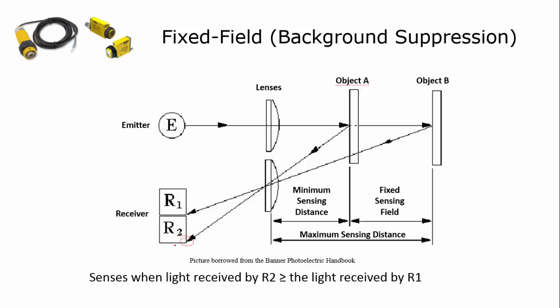Remember, the sensor senses as long as the light being received by R2 is greater than or equal to the light that's received by R1. Right now since it's striking R2, it is definitely greater than what's hitting R1.